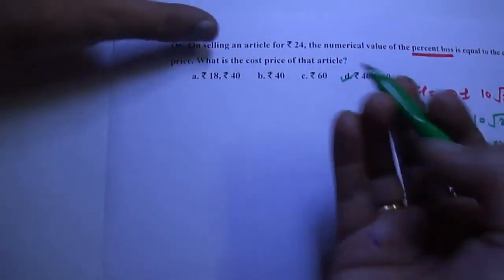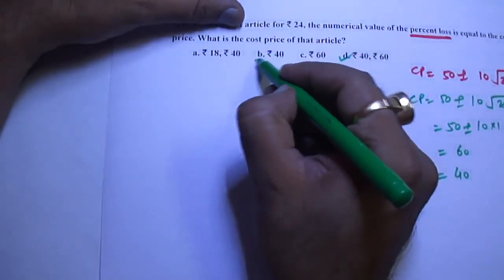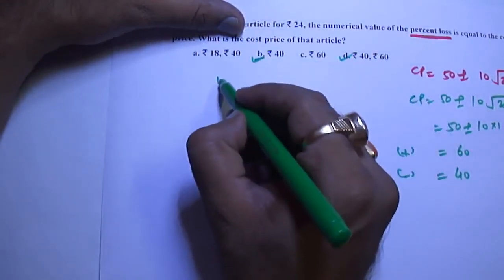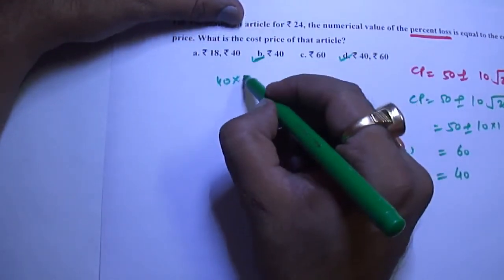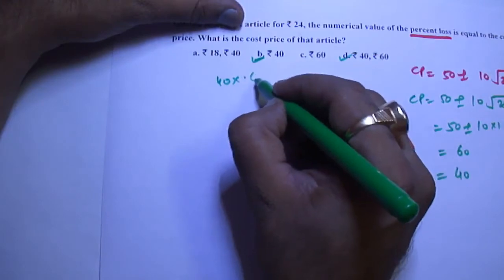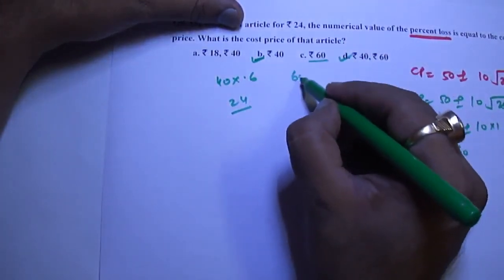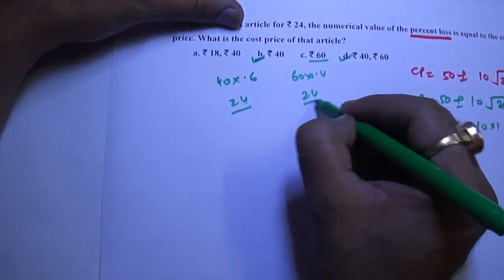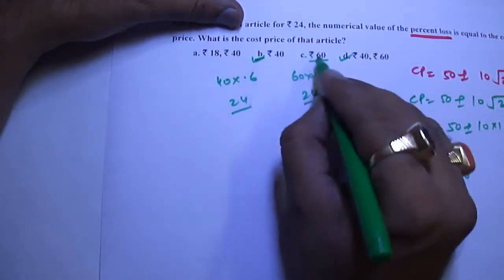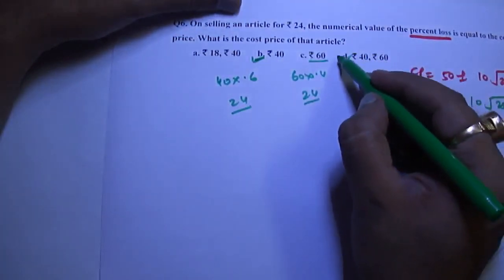Again, we can do by option. Taking 40, 40 and 40% discount means 40% loss means 0.6. Answer is 24. It gives us correct answer. Taking 60, 60 times 0.4, again 24. So from B and C, we are getting same answer. So our correct answer is D.